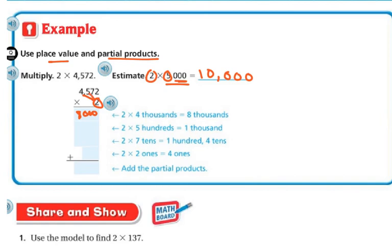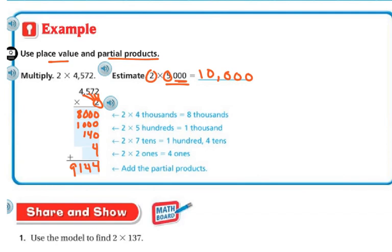Then I'm going to multiply 2 times the hundreds — 2 times 500 is 1,000. And then I'm going to multiply 2 times my 7 tens, and 2 times 7 tens is 140. And then I'm going to do 2 times 2 in my ones, and I'm going to get 4. So now: 4 plus 0 plus 0 is 4; 4 plus 0 plus 0 is 4; 1 plus 0 plus 0 is 1; and 8 plus 1 is 9. So 9,144 is really close to my estimate of 10,000, so I know that 9,144 is a reasonable answer.